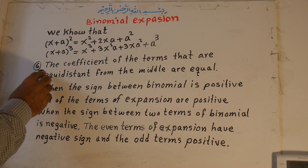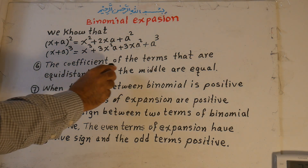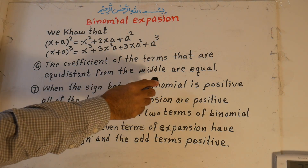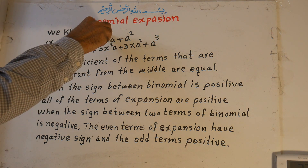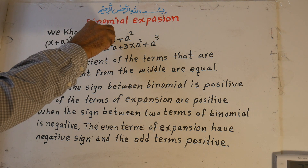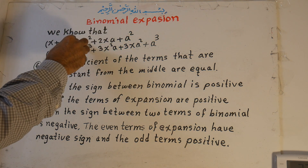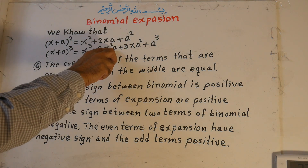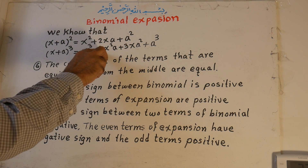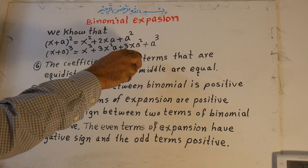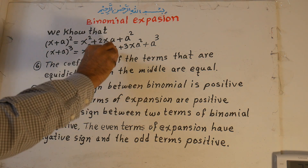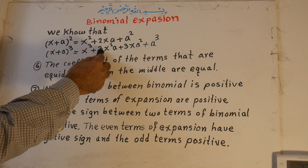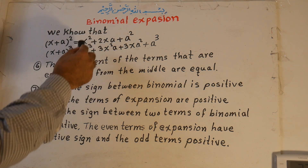Number six: the coefficients of terms that are equidistant from the middle are equal. For the expansion with exponent 2, the middle is the second term, and the coefficients are 1, 2, 1 — so the first and last are both 1. For exponent 3, the coefficients are 1, 3, 3, 1 — the ones equidistant from the middle are equal. All coefficients equidistant from the center of the expansion are equal.